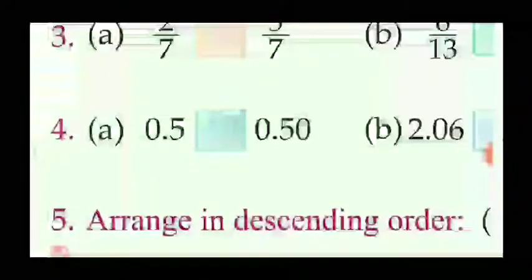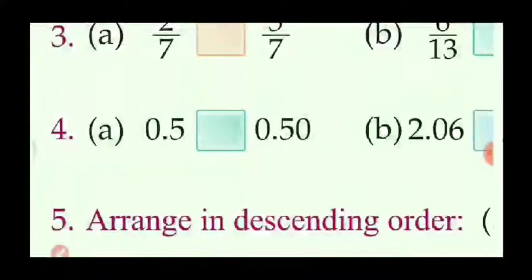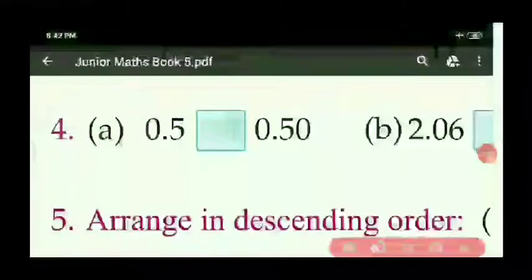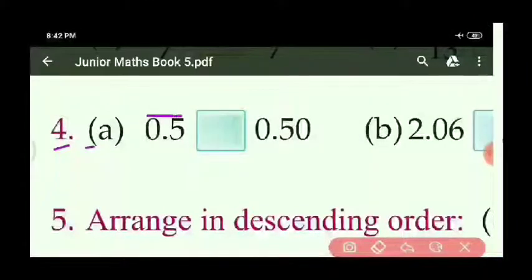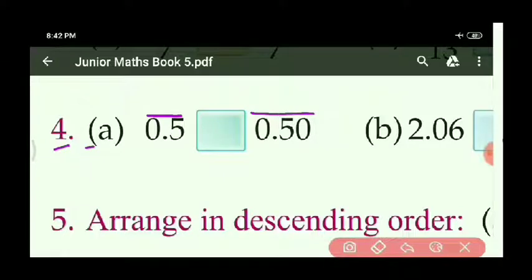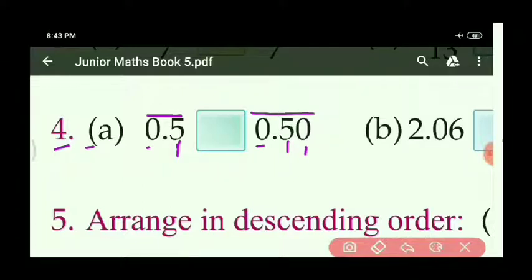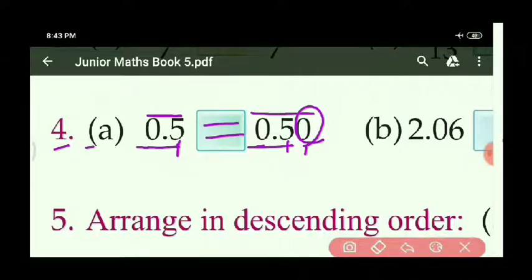Now question number 4, A part: compare 0.5 and 0.50. Before the point, both have 0 — ones place is 0 and 0, equal. After the point, tenths place is 5 and 5 — both equal. The extra 0 after the decimal at the end can be dropped. So 0.5 and 0.50 are equal — make the equal sign.